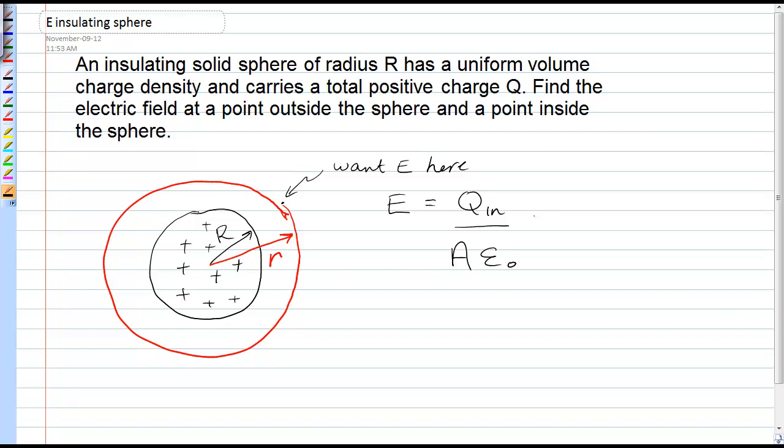So, in this case, the charge inside our Gaussian surface is the entire charge of the sphere. So, it's just q. The area of that spherical Gaussian surface is 4 pi r squared epsilon naught. And so, this can just be written as kq over r squared.